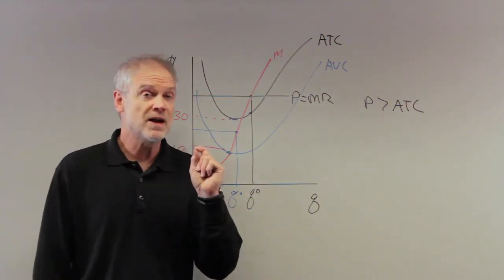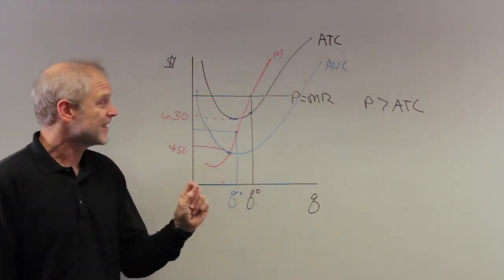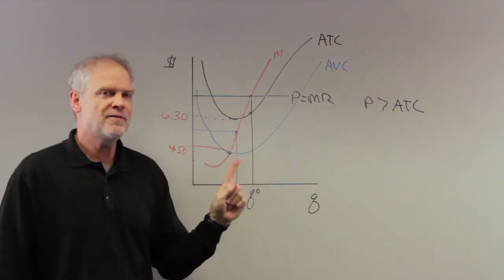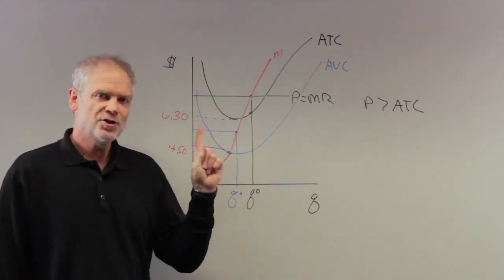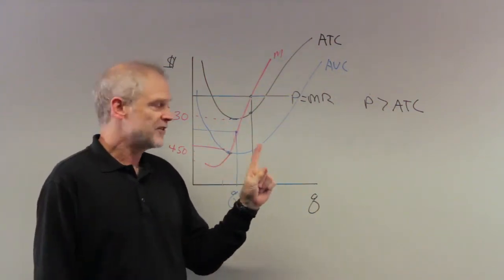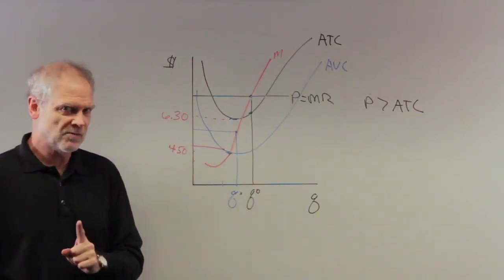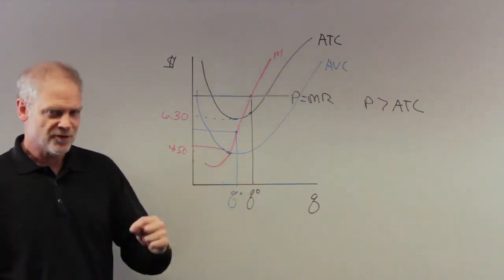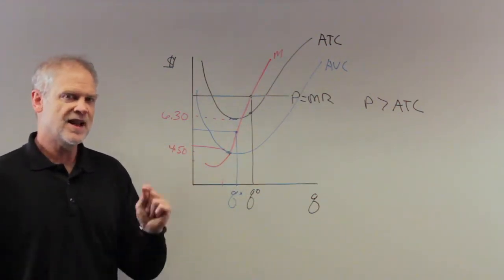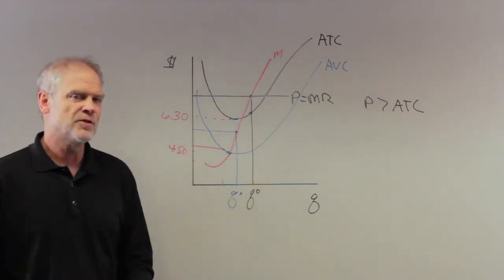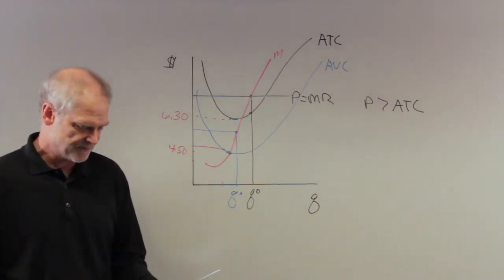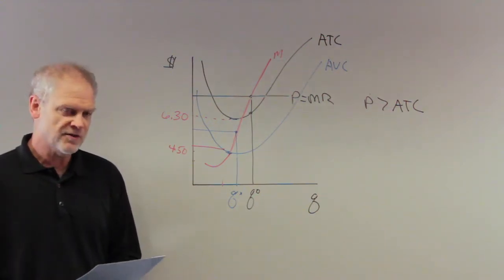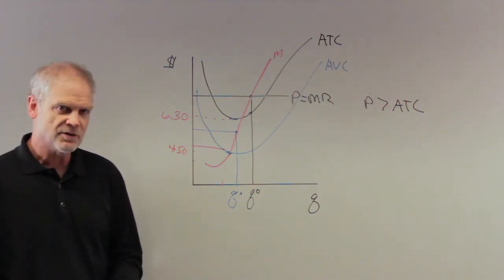I've underlined 'short run' because in perfectly competitive markets, short run profits can exist, but long run above-normal profits cannot. New firms will come in and knock the price down. We'll do a bit more of this later in the quiz. Let's continue — they're all using Figure 14.1.